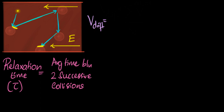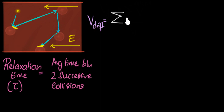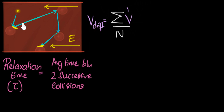Mathematically, drift velocity equals the summation of velocities at every single point — V1, V2, V3, V4, V5, V6 — all the points, represented by V — divided by n. So V here is the velocity at any given point.